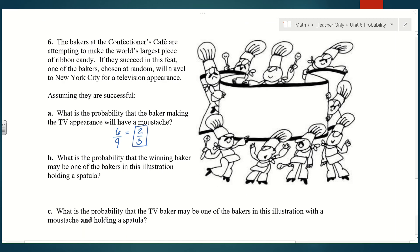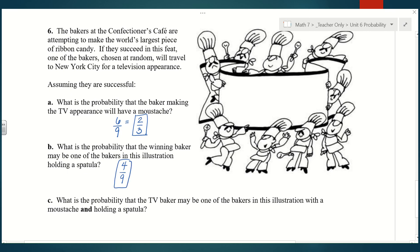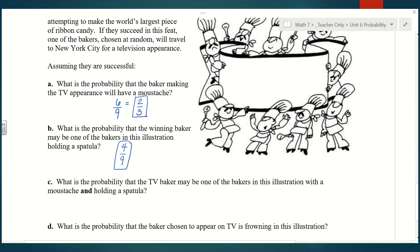For B, what is the probability that the winning baker may be one of the bakers in this illustration and holding a spatula? We have one, two, three, four bakers holding spatulas, so 4 out of 9. And what is the probability that the TV baker may be one of the bakers in this illustration with a mustache and holding a spatula? Now we have to make sure it has both things, a mustache with a spatula. I am counting one, two, three. Three out of 9, or 1/3.